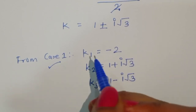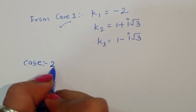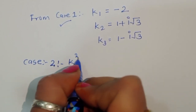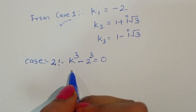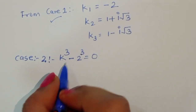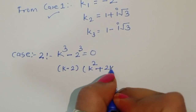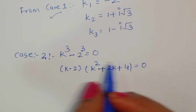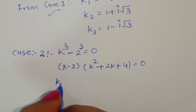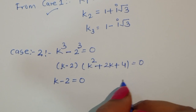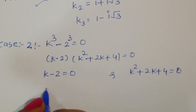Now for Case 2: k^3 - 2^3 = 0. Applying the a^3 - b^3 formula, we get (k - 2)(k^2 + 2k + 4) = 0. This gives k - 2 = 0 and k^2 + 2k + 4 = 0. From the first equation, k = 2.